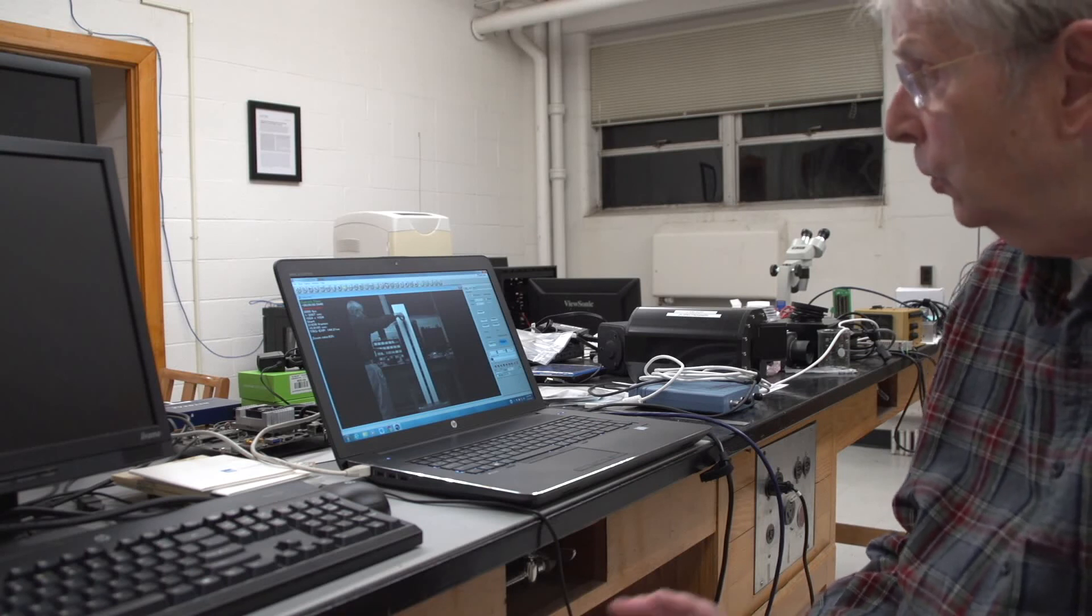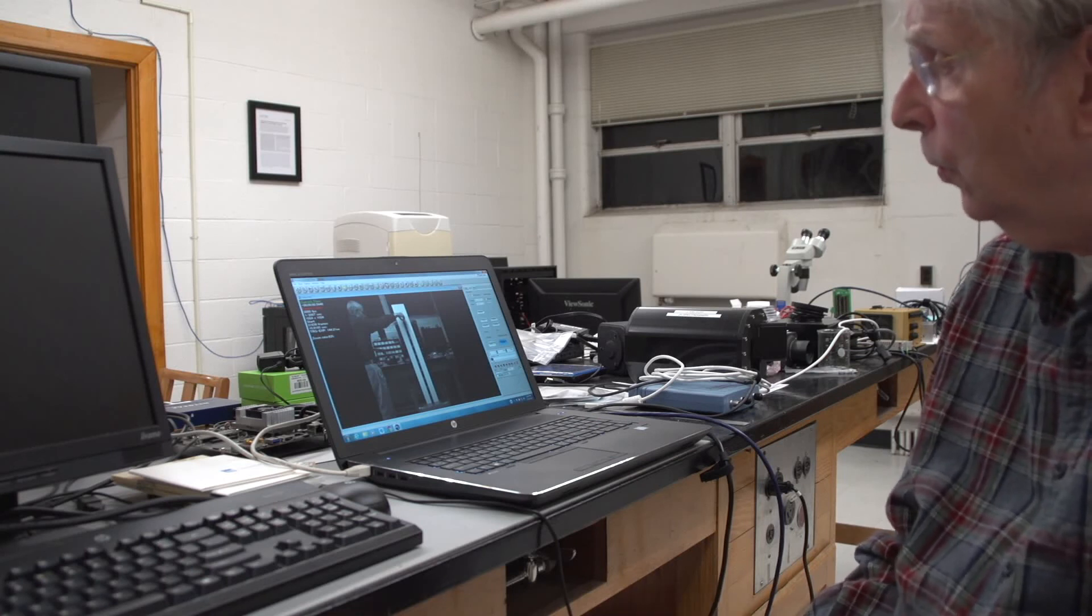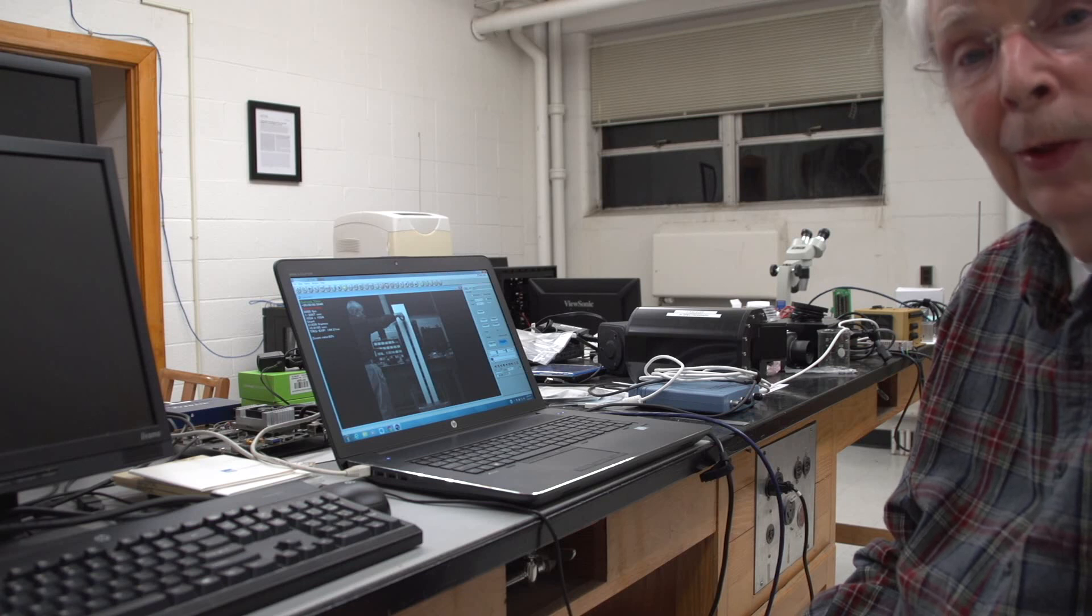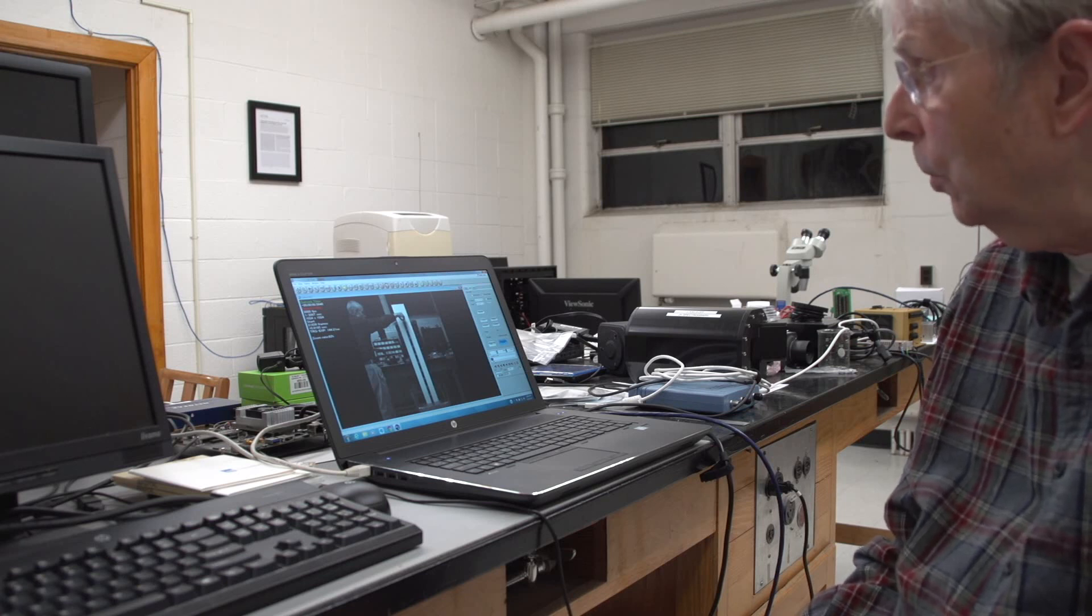So you'll have 2,000 frames per second recorded, 24 playing back. The ratio of those two numbers is how much the motion is slowed down by, and then we'll be able to analyze how the ball falls.